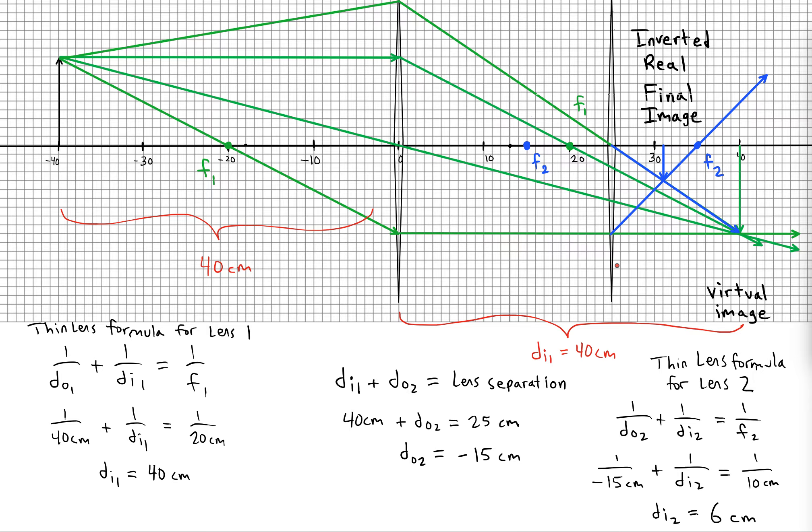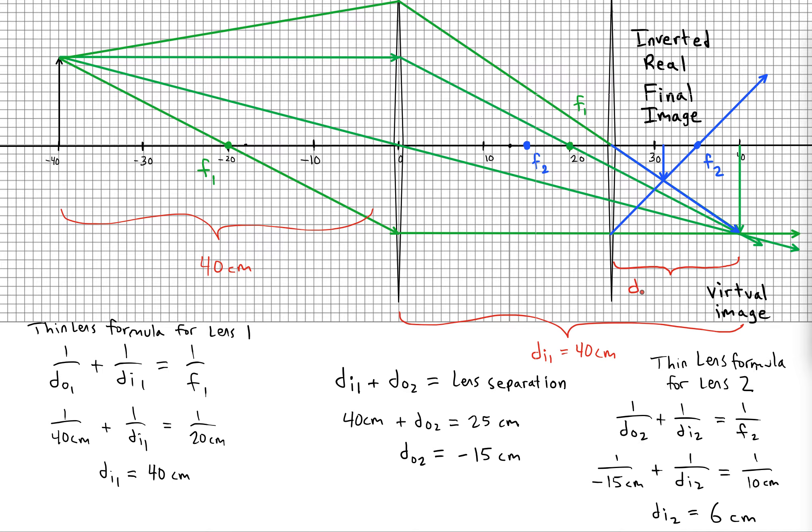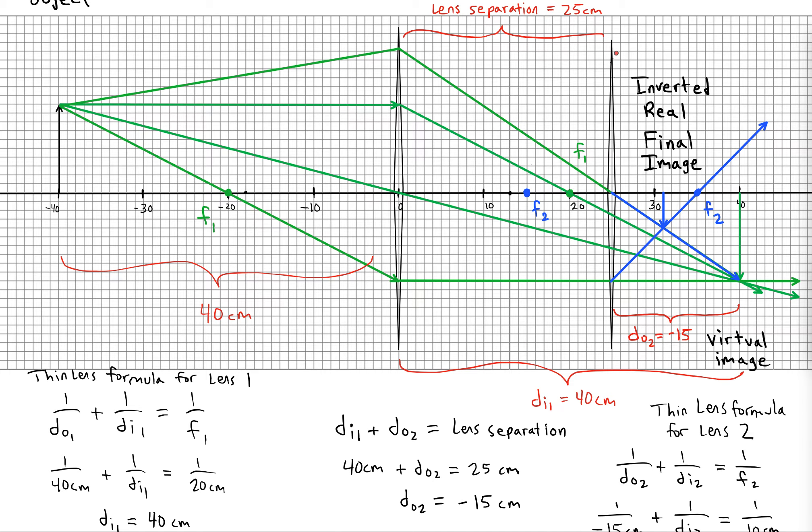So like here, our DO2 is negative 15. This distance here is DI2, which is 6 centimeters, so it looks good.